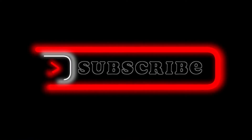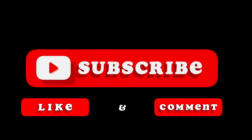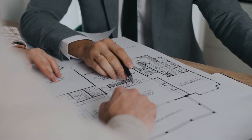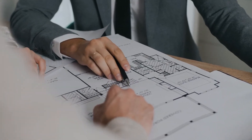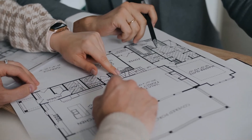The next important topic under the basics of house electrical wiring is how to calculate the electrical load for your house. The electrical load calculation is an important step that decides the type of electrical connection and the wiring layout design for your house. This is another important step that needs to be done at the planning stage.